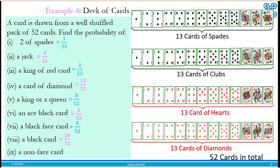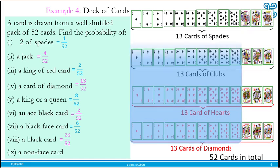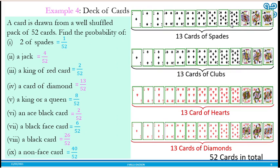Then a non-face card, that means cards without pictures. You count all of them and that will be 40 over 52. So once you understand the composition of the cards, you will really be able to answer questions on deck of cards.